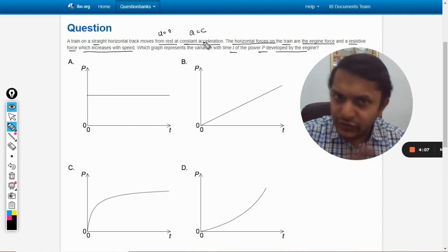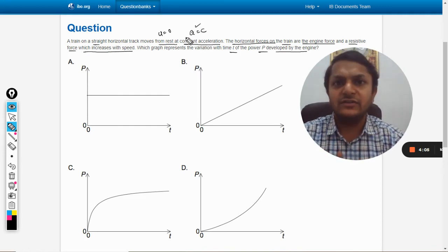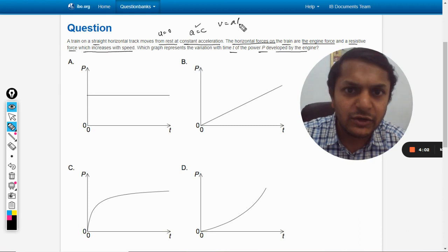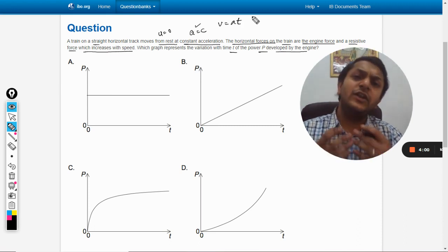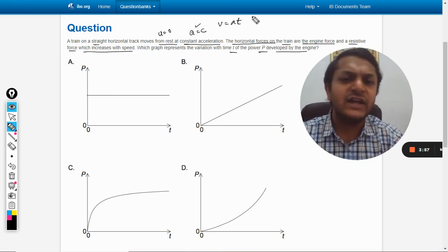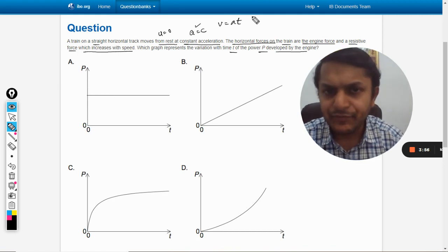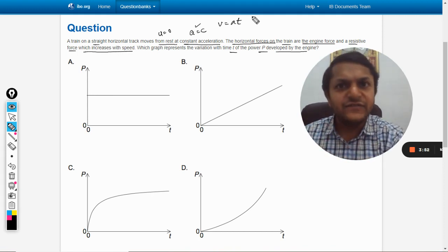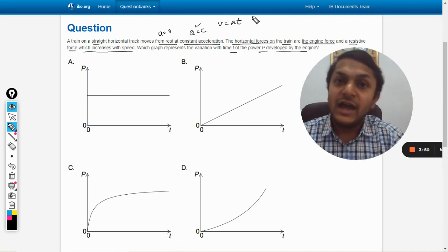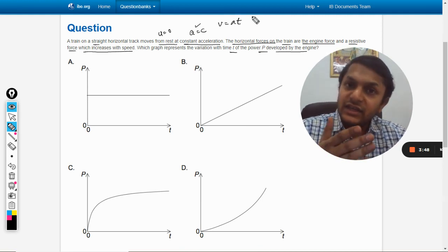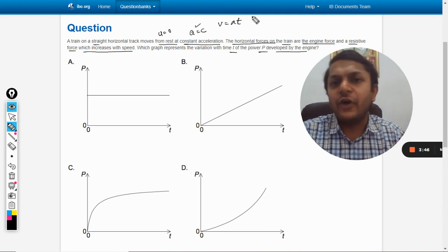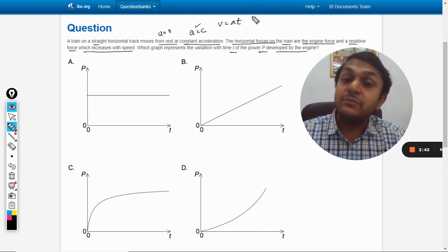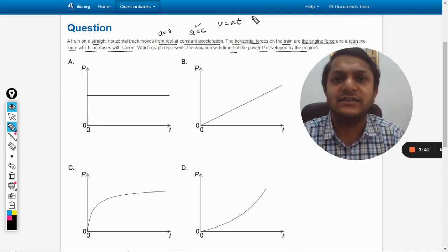So v equals u plus at, and v equals at. We're sure that the velocity of the train will keep increasing. If the velocity keeps increasing, the resistive force will keep increasing also, and that's why the forward force provided by the engine must constantly increase itself.